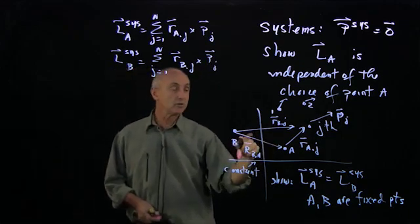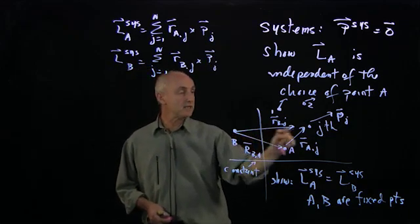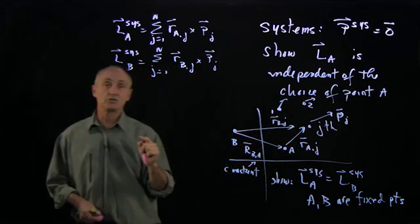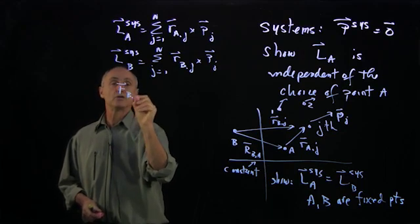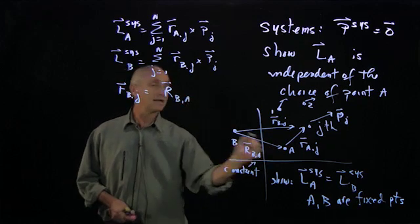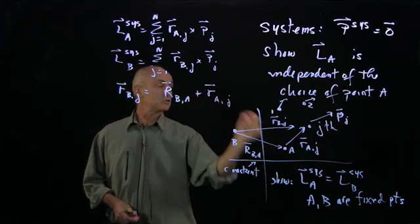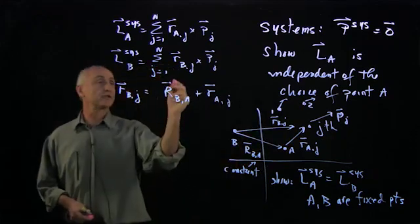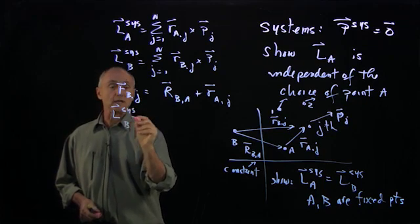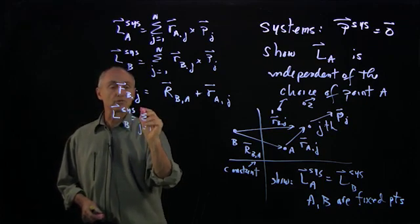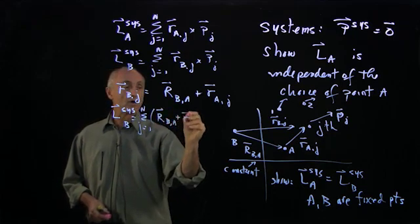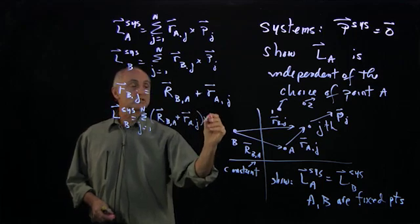I'll use the vector triangle: the vector from B to J equals the vector from B to A plus the vector from A to J. So R_BJ equals R_BA plus R_AJ. I'll substitute that into our expression for the angular momentum about B.